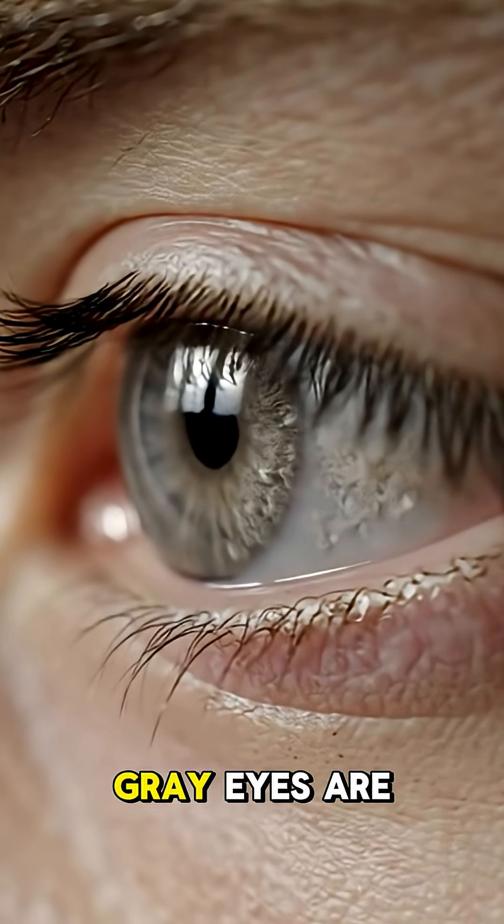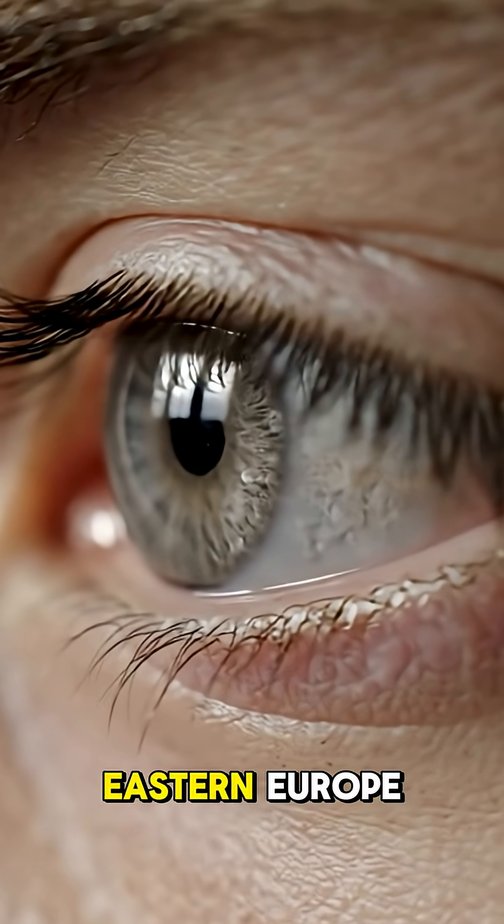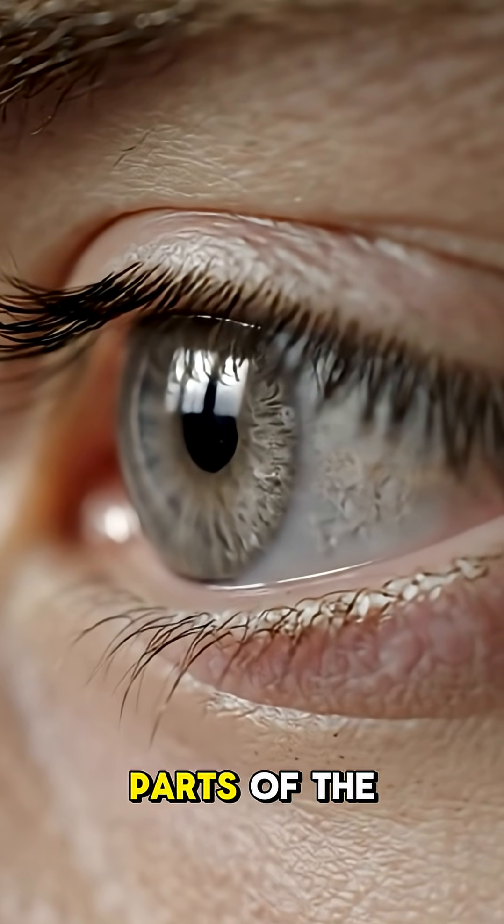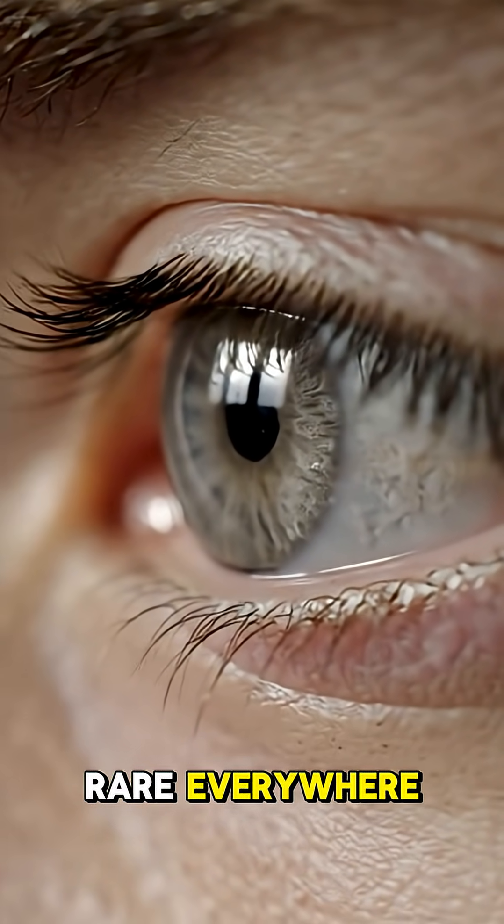While people with gray eyes are most commonly found in Northern and Eastern Europe, as well as parts of the Middle East, they are exceptionally rare everywhere.